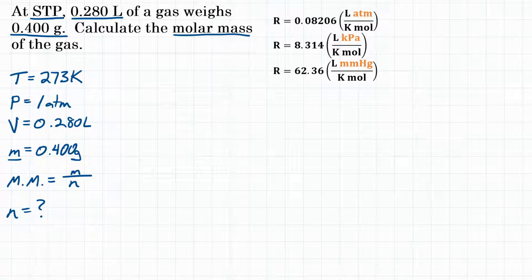To solve for moles, we're going to use the ideal gas law, which is PV equals nRT. We're using this equation because we have temperature, pressure, volume, and our R value, which we can use to solve for n, which is moles. Let's rearrange our equation to solve for n.